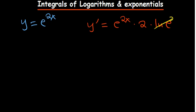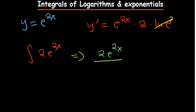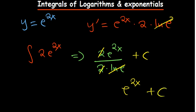Since integration is the opposite of differentiation, if I'm given the integral of 2e^(2x): for differentiation I multiplied by the derivative of the power and the natural log of the base, so this time around I'll divide. You divide 2e^(2x) by the derivative of the power — which is 2 — and by the natural log of the base. The 2s cancel and natural log of e equals 1, so what remains is e^(2x) plus c.